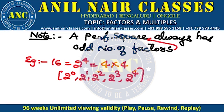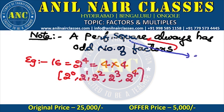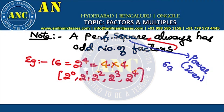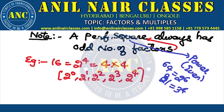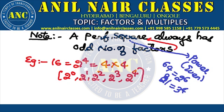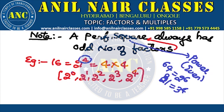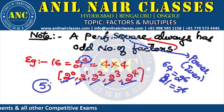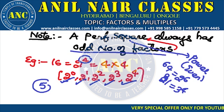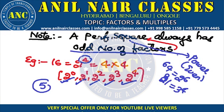Any perfect square — the power will always be an even number. Take any perfect square: 64 is 2^6, 81 is 3^4. If a number is a perfect square, the power will be even. Starting from 0 up to that even power gives an odd count. For 2^4, we count 2^0 to 2^4 — that's 5 values, which is odd. That is the reason a perfect square will always have an odd number of factors.